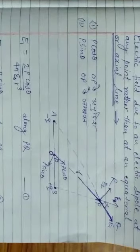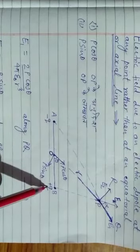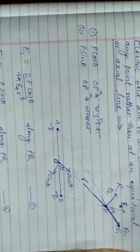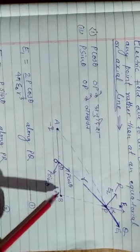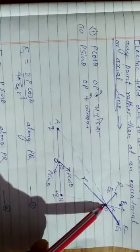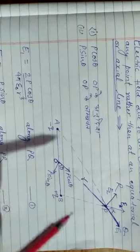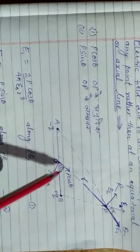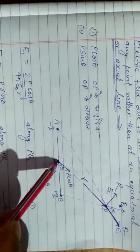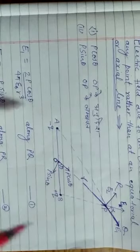जैसा कि आप लोग देख रहे हैं, AB एक वैद्युत द्विध्रुव है जो माइनस Q और प्लस Q चार्ज को मिलाकर बना हुआ है। अब हम मानें कि इस वैद्युत द्विध्रुव के मध्य बिंदु O से R दूरी पर कोई बिंदु P है, जो कि इसके अक्षीय और निरक्षीय स्थिति से हटकर है। O से बिंदु P को मिलाने वाली रेखा OP, द्विध्रुव से थीटा कोण बना रही है।